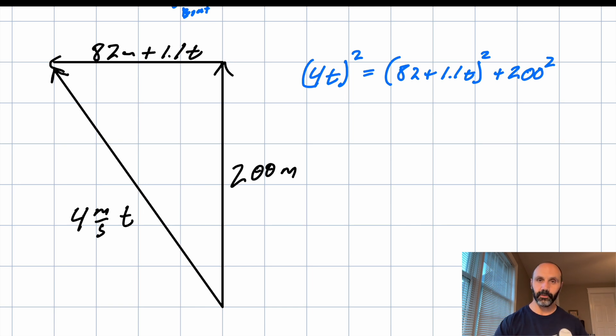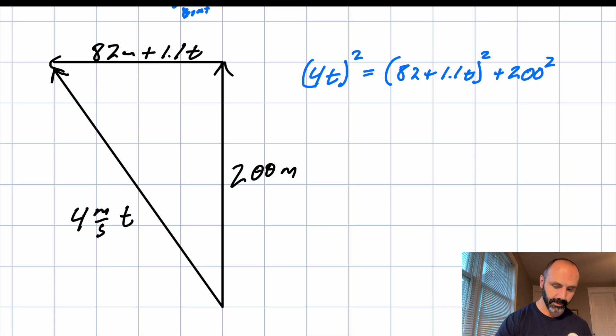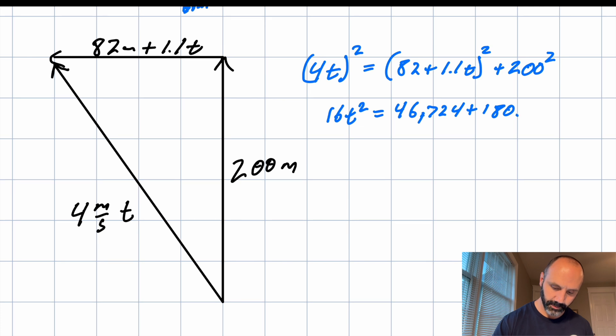So I'll spare you working out the details every step of the arithmetic here. But we end up with 16t squared equals 46,724, I think that's what that says, plus 180.4t plus, I think that's a 1.21t squared.